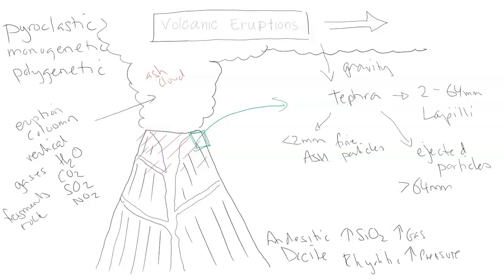Not only would you have the ash cloud raining down different-sized particles on the surrounding area — covering the sky, making it very hard to breathe, and filling it with toxic gases — but you also have massive chunks of volcanic rocks flying through the air. These are called either blocks or volcanic bombs.